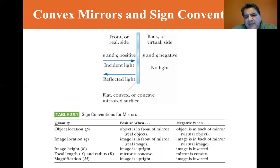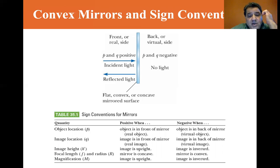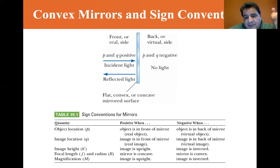These are the sign conventions. The object location P is positive when the object is in front of the mirror — that's a real object. If the object is in back of the mirror, that's a virtual object. Image location Q: if the image is in front, it's a real image; if the image is in back of the mirror, it's a virtual image.